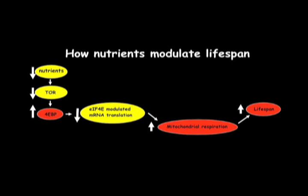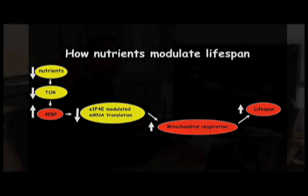This leads to a modulation of EIF-4E-mediated translation, which has an overall effect of inhibiting translation, but enhances translation of certain genes, including those involved in mitochondrial respiration. This mediates the lifespan extension that you see upon dietary restriction.